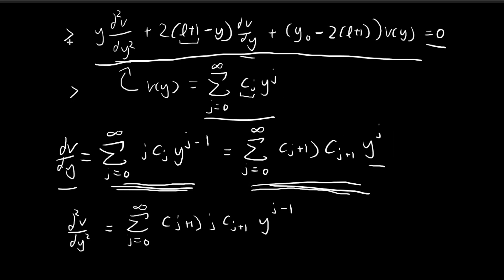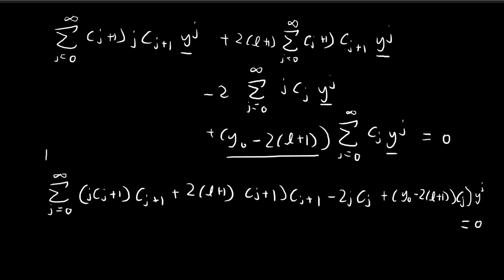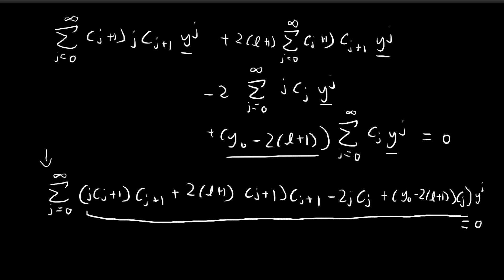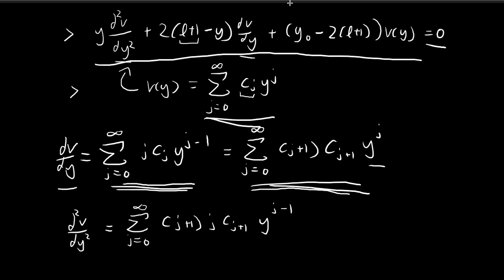For this differential equation to be satisfied with a series solution of this form, this summation must equal zero for all values of y. Since y can be any value, the only way to guarantee this is if the entire coefficient — this long string of terms — equals zero for every j. That ensures the summation is always zero and guarantees that v(y) satisfies the differential equation.